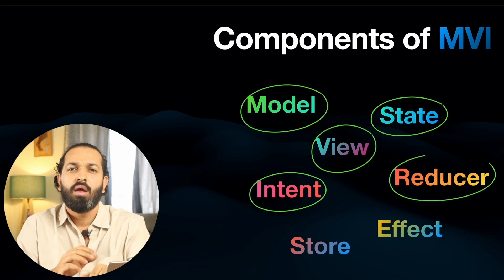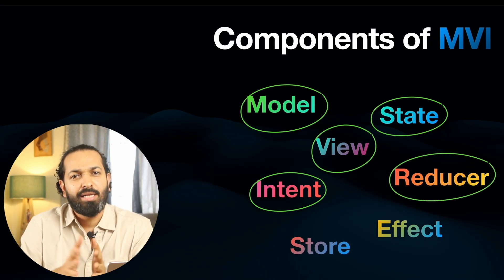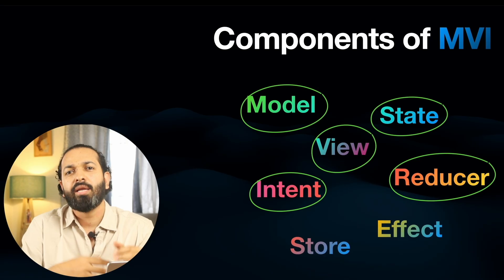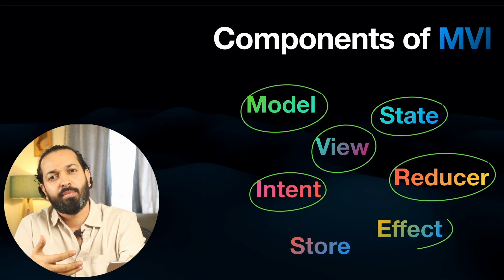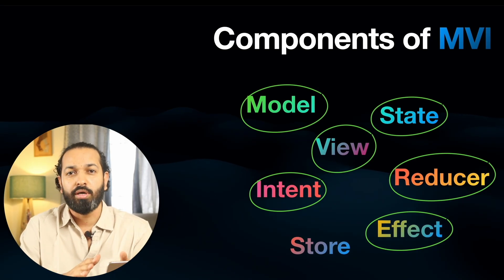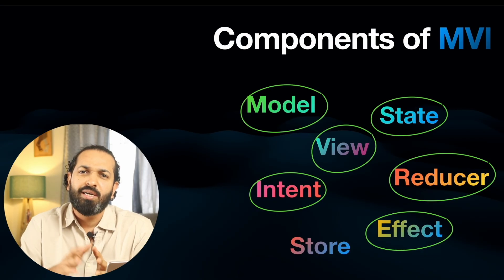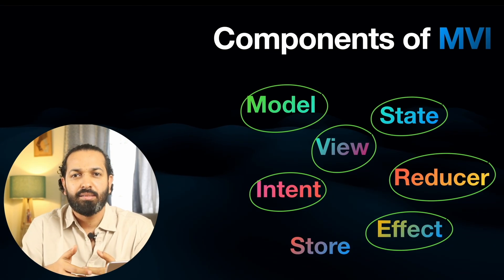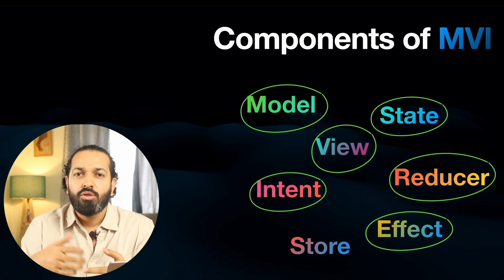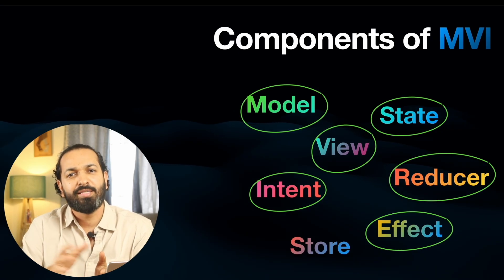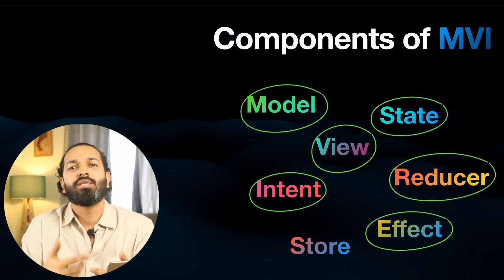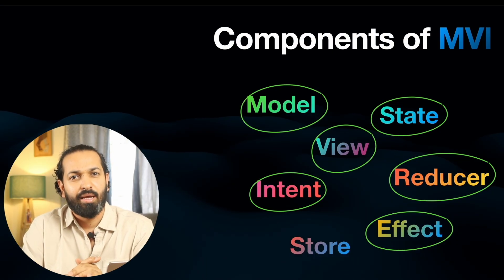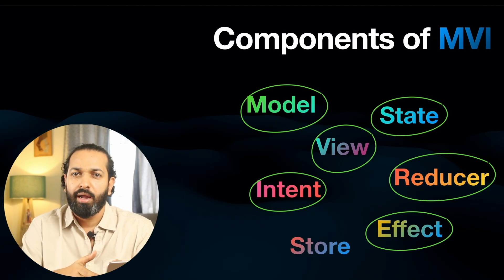The next component is the reducer. The reducer is the decision maker. It takes the current state and intent as parameters and returns a new state. Along with the updated state, it can also return some effects. Effects represent something outside the pure Swift world — like network calls, file reads, delays, notifications. Reducers never directly call APIs; they just return an effect saying 'we need to fetch the data,' and then the store executes it. So the reducer returns two things: updated state and effects. It's like: I've updated the state to loading, and now we need to fetch the data.